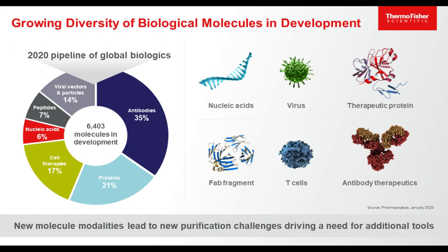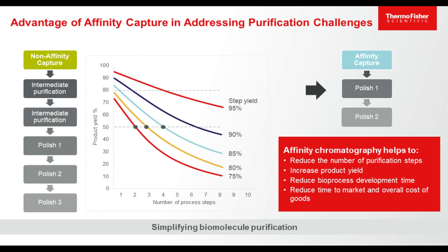Moving away from monoclonals means that all of these new biological entities actually lack a standard purification platform, which means these products are usually being purified by multi-step processes — as depicted on the left-hand side — for a non-affinity capture step. If you use these processing steps and have, say, three steps at 80% yield, you're throwing away half of the product cultivated upstream when you go to purify the molecule. The purpose of our platform technology is to move the purification protocol from multi-step to affinity capture, reducing the number of steps in your purification process.